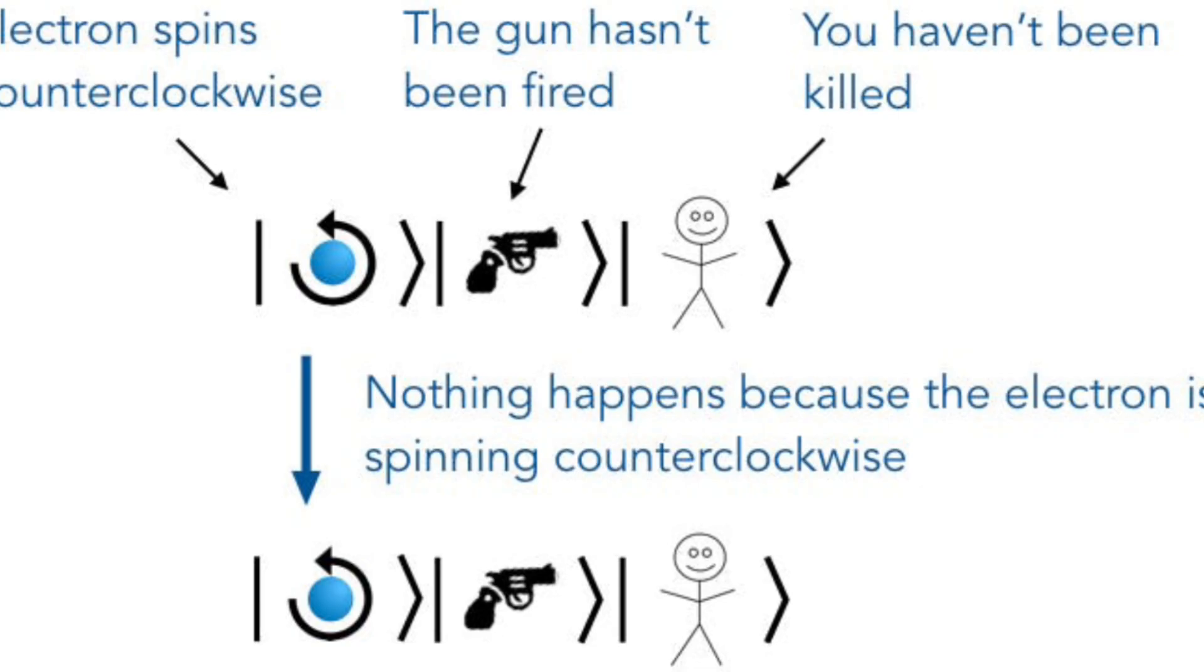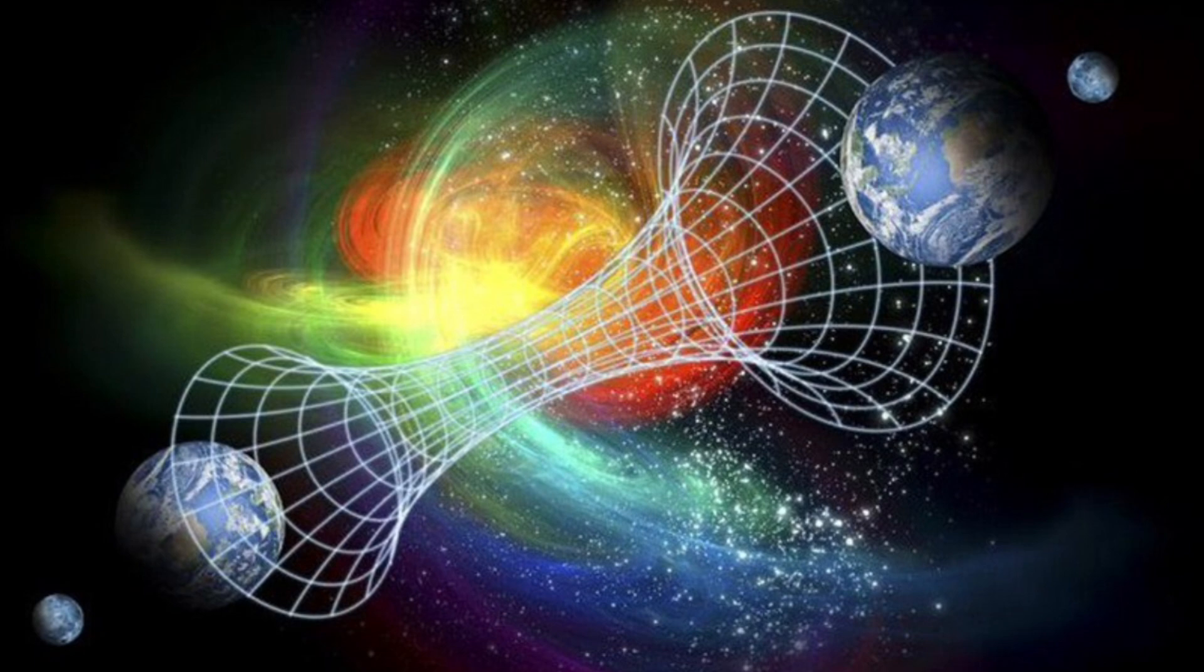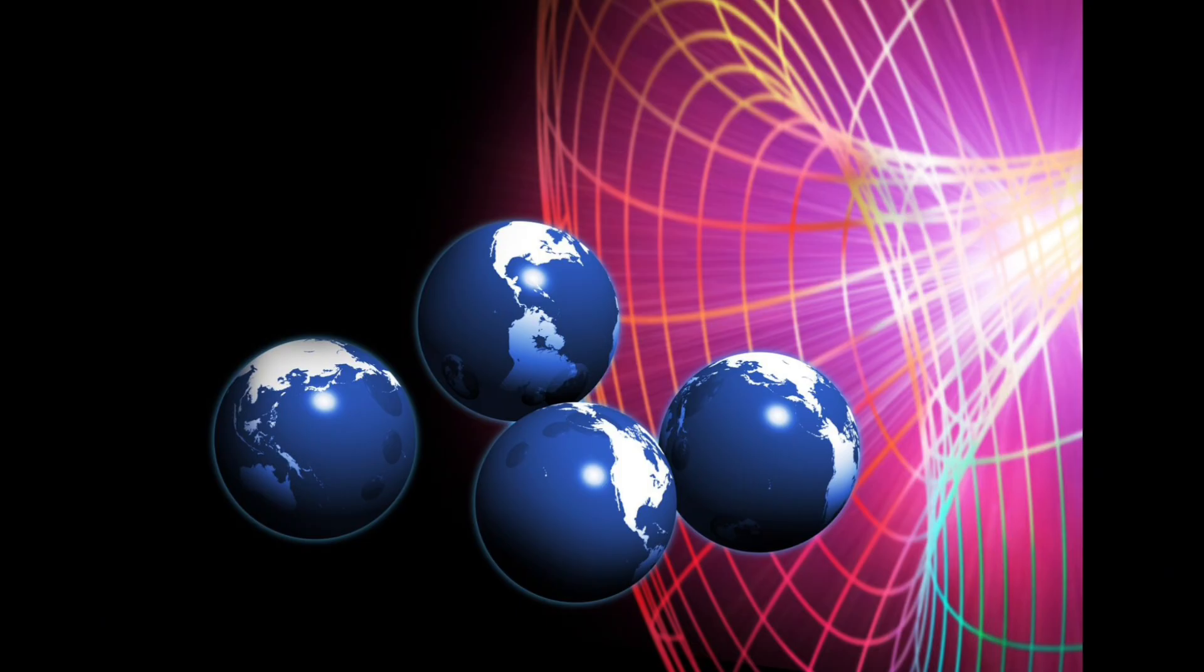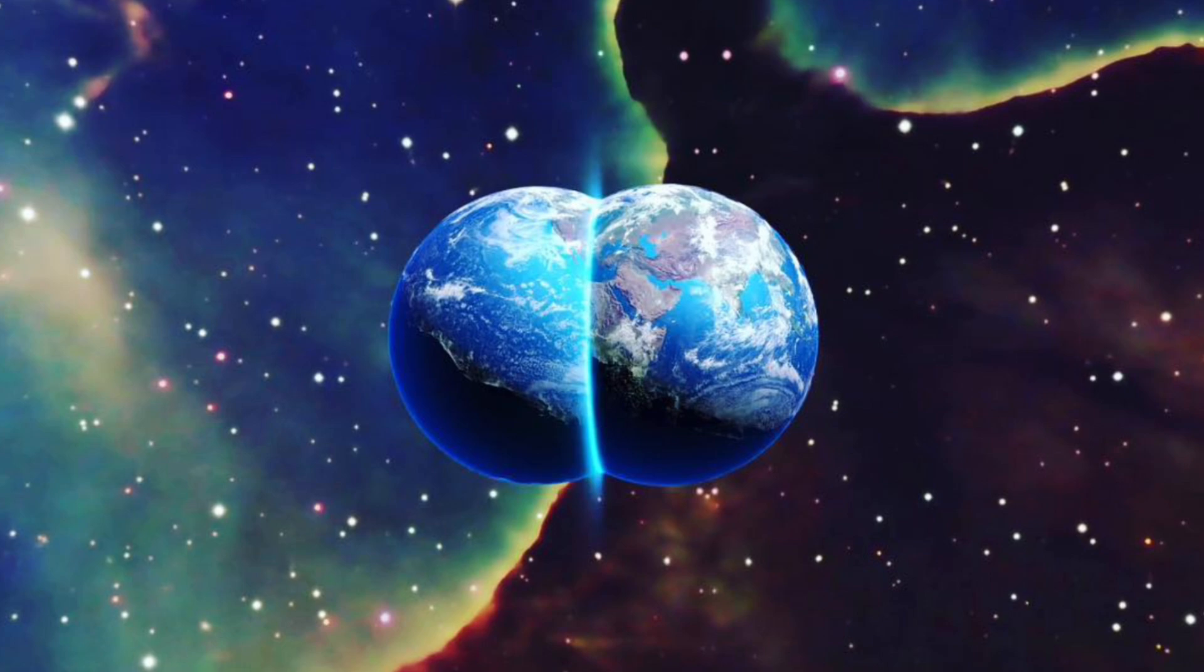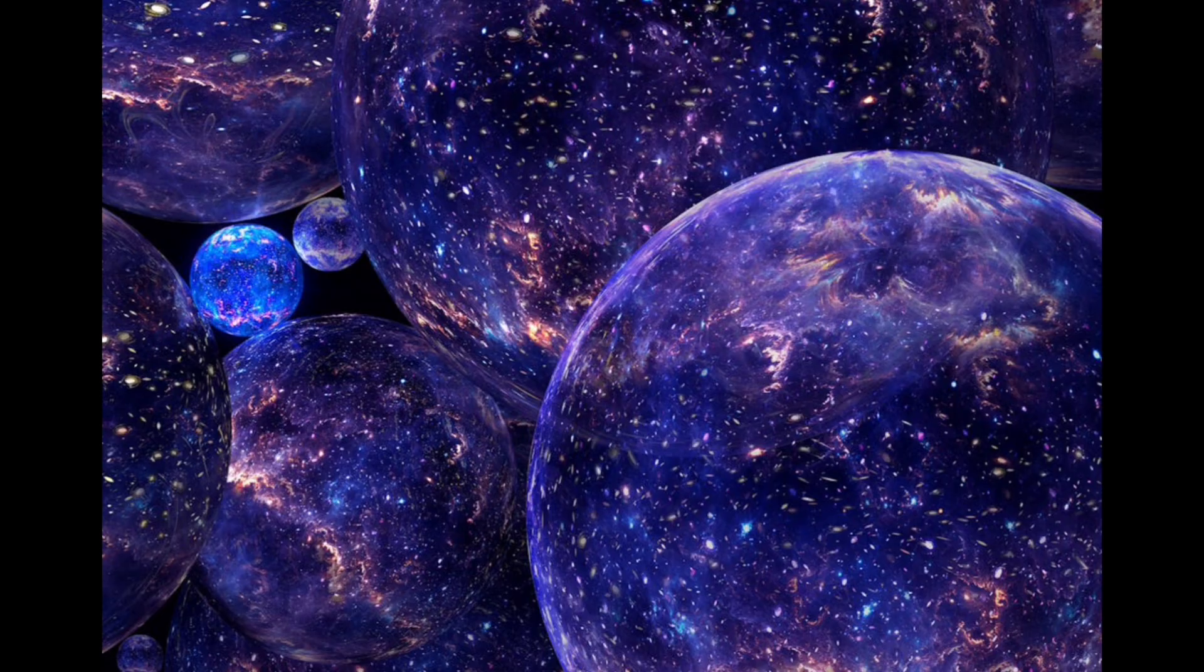In summary, calling quantum mechanics incomplete reflects the belief that the theory may be missing an underlying reality that classical physics implies, or that it doesn't address certain fundamental issues like causality, locality, and unification with gravity. While quantum mechanics is extraordinarily accurate in its predictions, scientists continue exploring whether it needs augmentation to account for hidden structures, or whether new interpretations and theories, such as quantum gravity, are required to make our understanding truly complete.